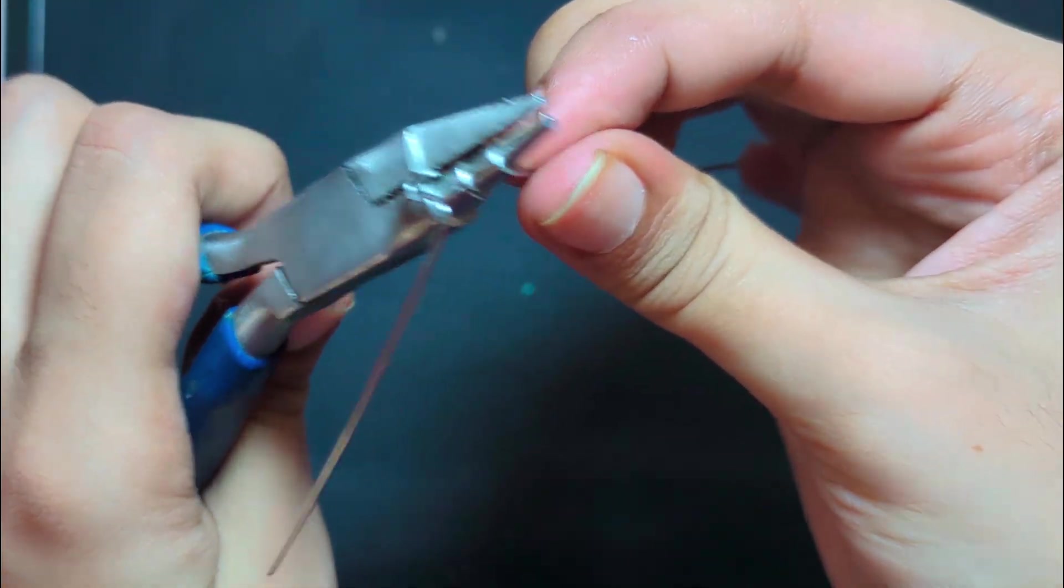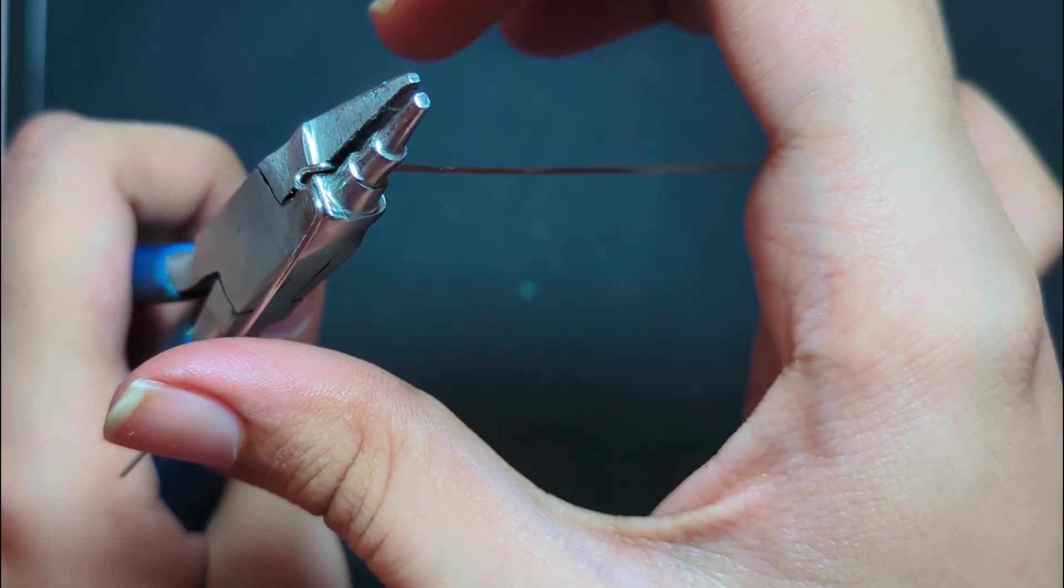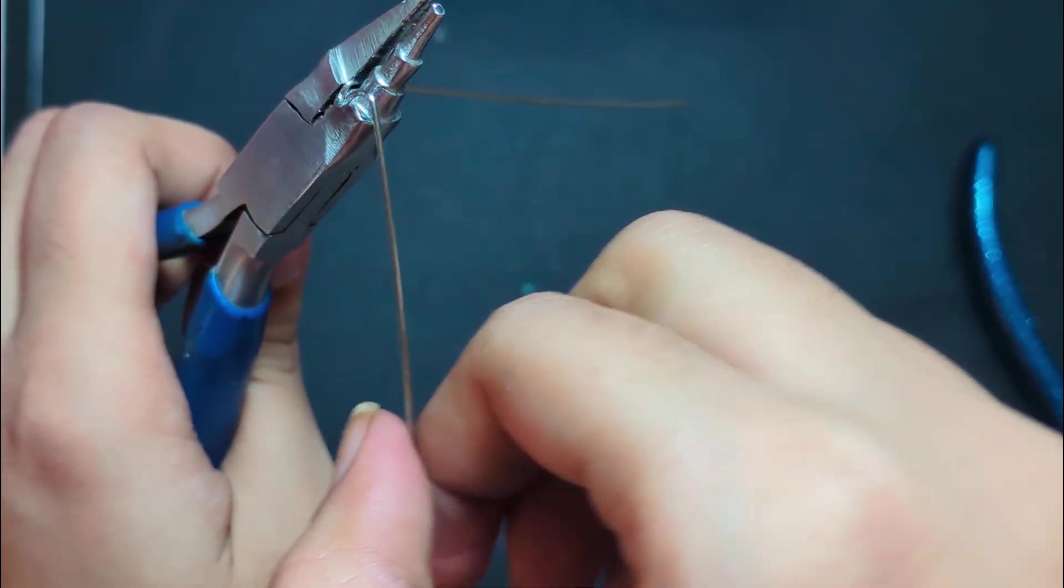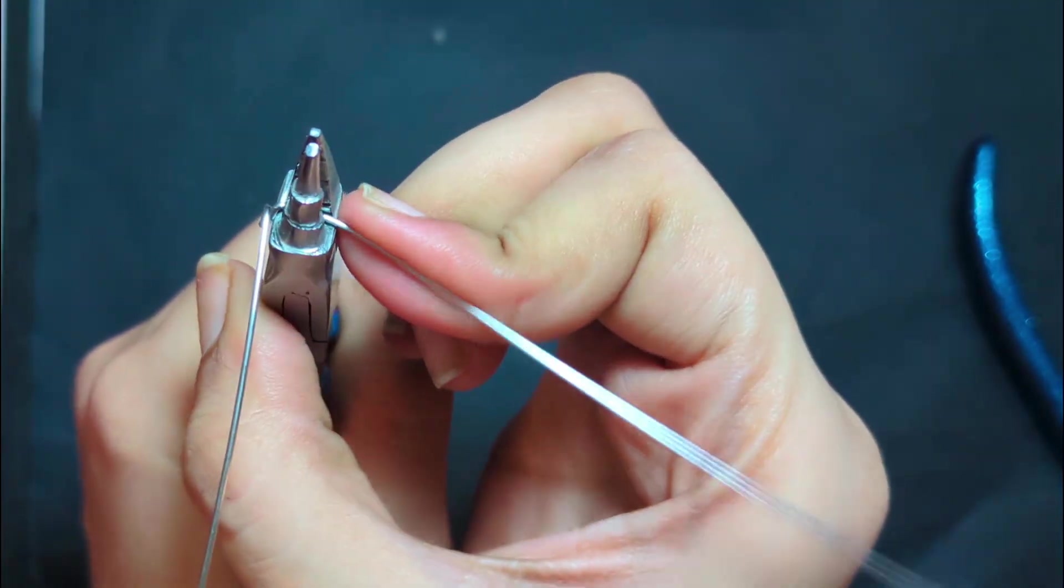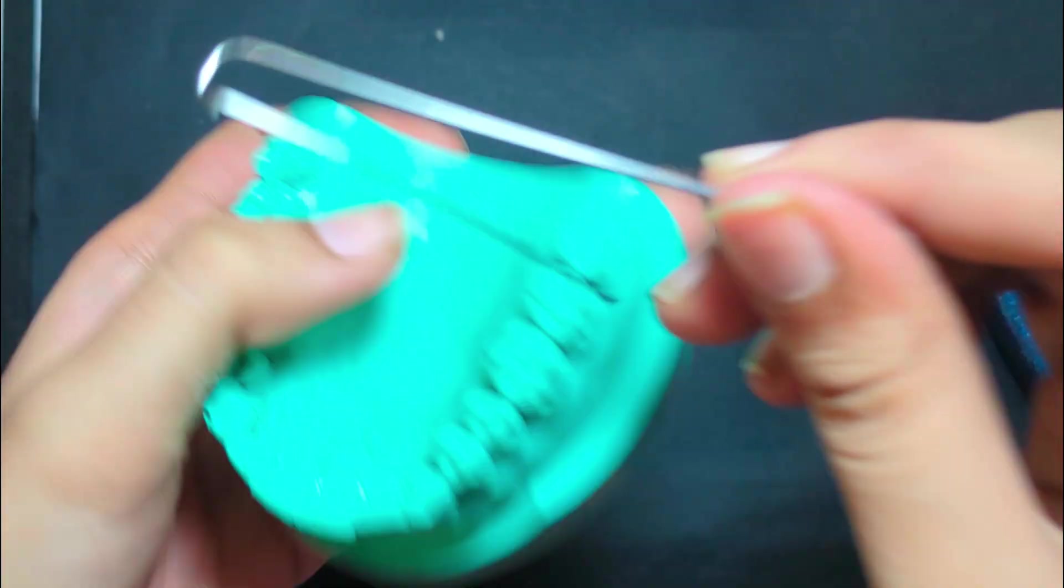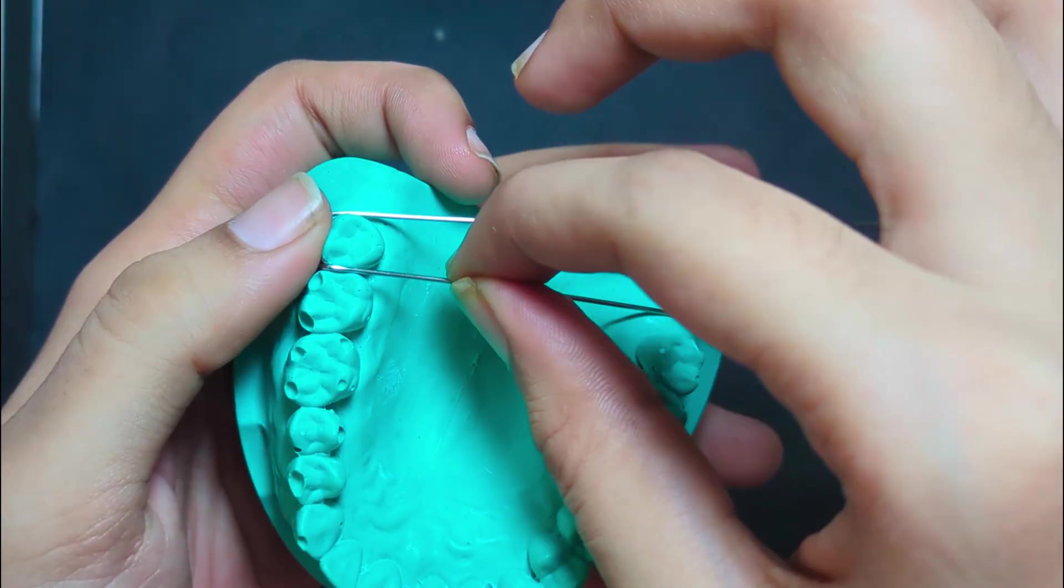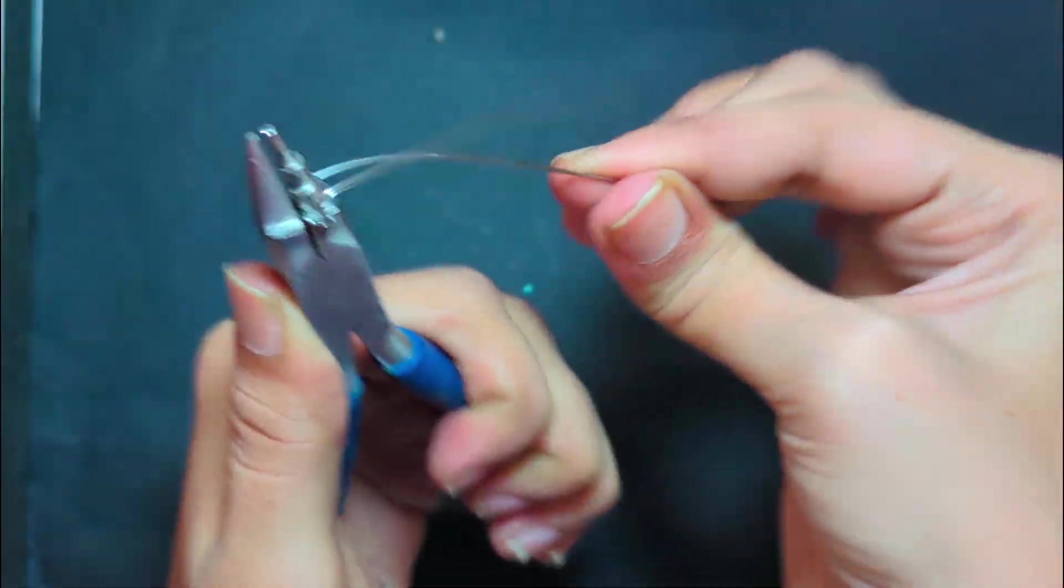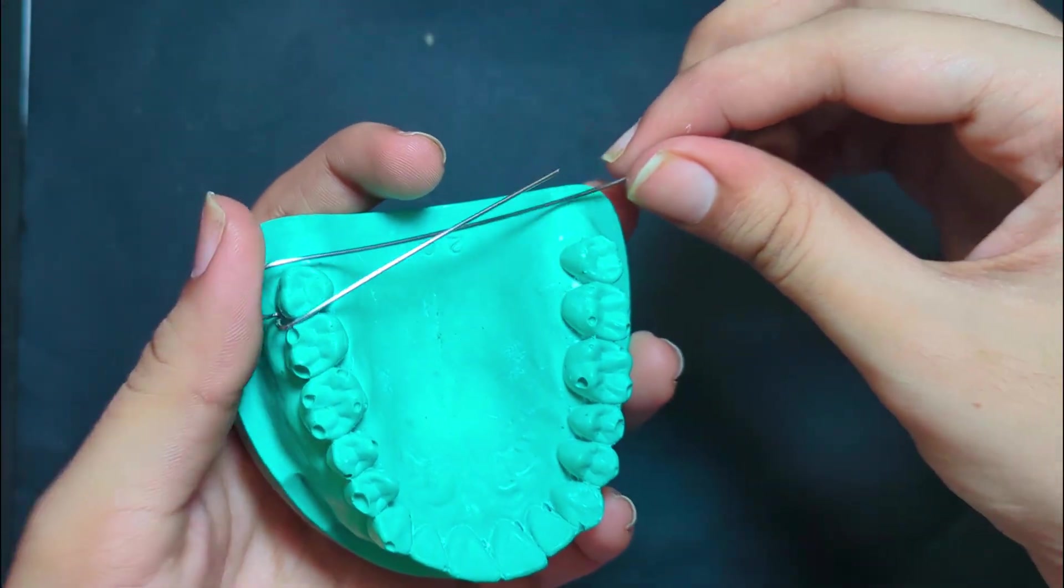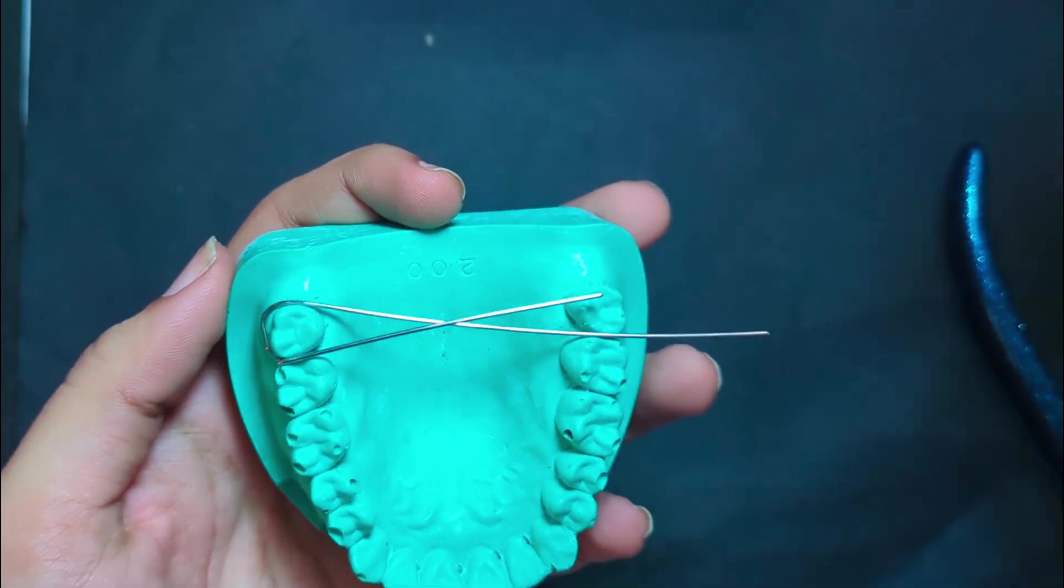Place the center part of the clasp in the last or before last loop, then give a bend. The other end of the clasp must adapt the contour of the tooth. Adjust the clasp to adapt on the cast and cut the excess wire.